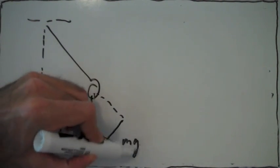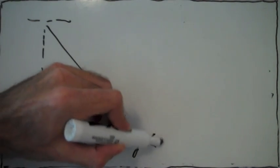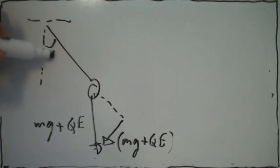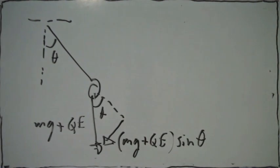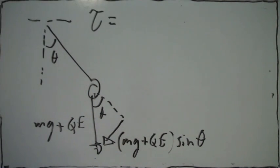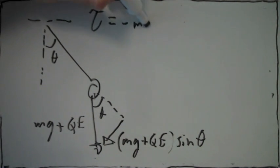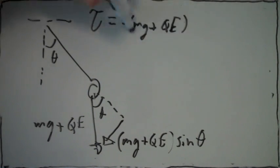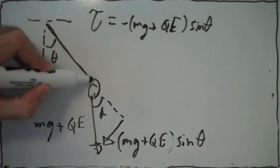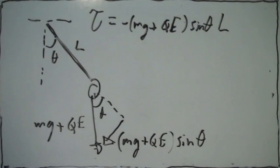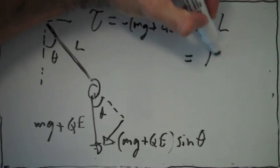The total downward force is mg plus qE. Then (mg + qE) times the sine of the angle is the component of the force that makes it swing in the clockwise direction. So the total torque acting on the mass is just this force that makes it swing clockwise times the length of the string.